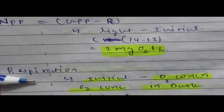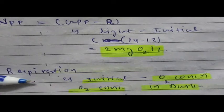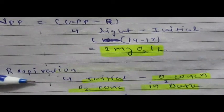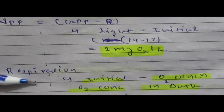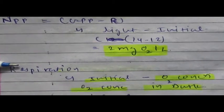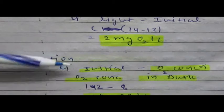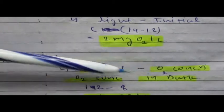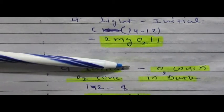Respiration occurs both at the initial period and in the dark bottle. The initial period has slightly higher oxygen concentration than the dark period. So to calculate the respiration rate: initial O2 minus dark bottle O2 = 12 − 8 = 4 milligrams per liter. That is the respiration rate.